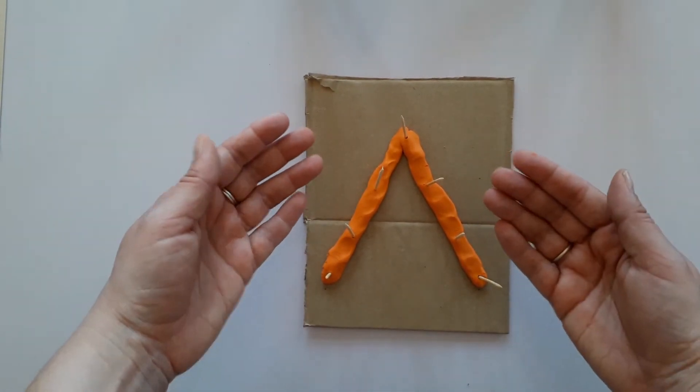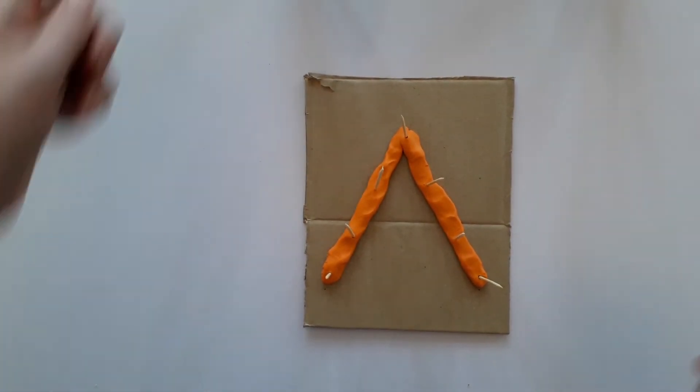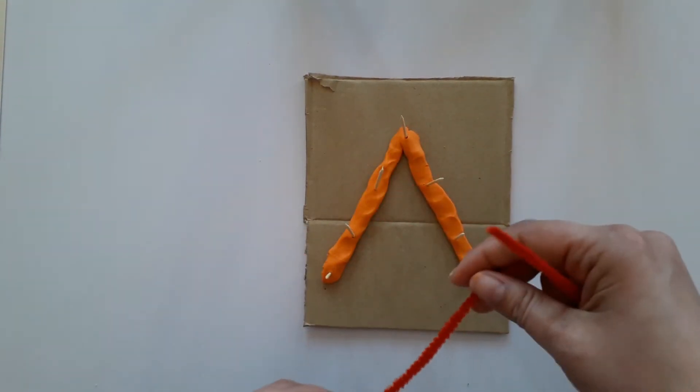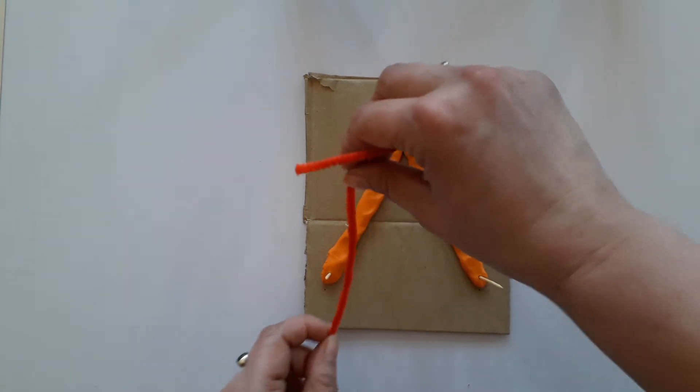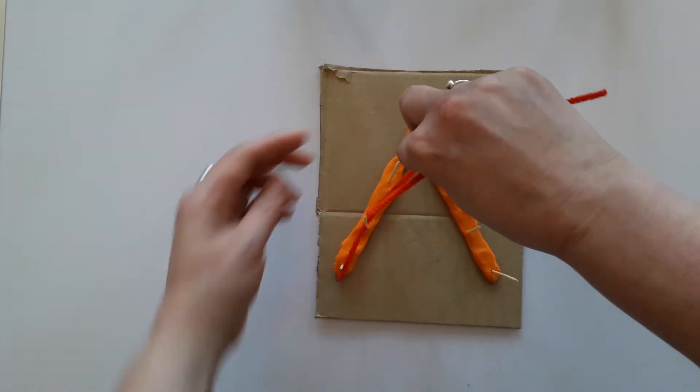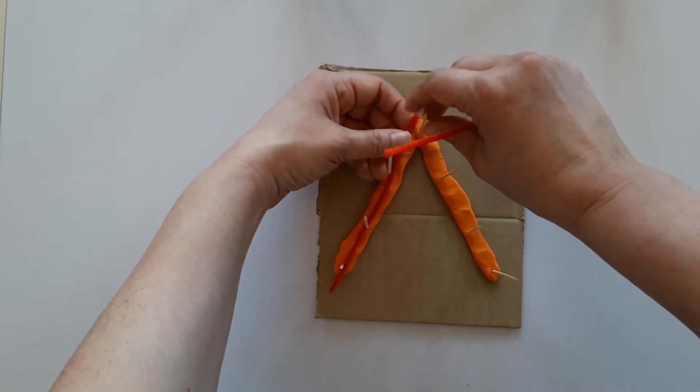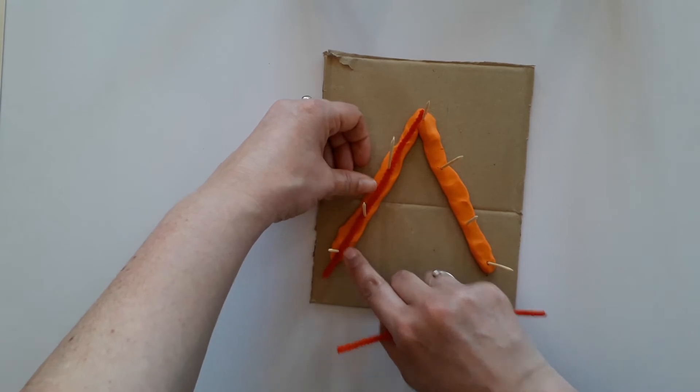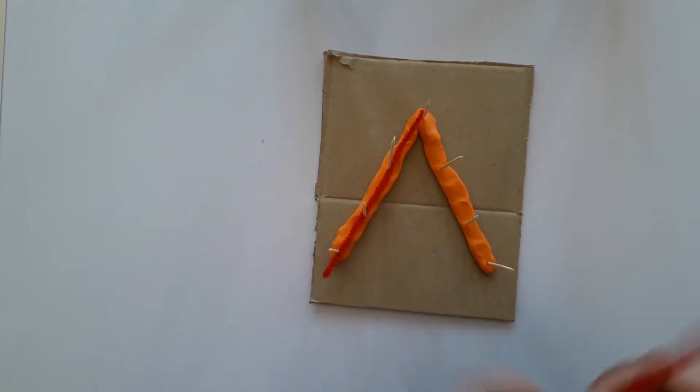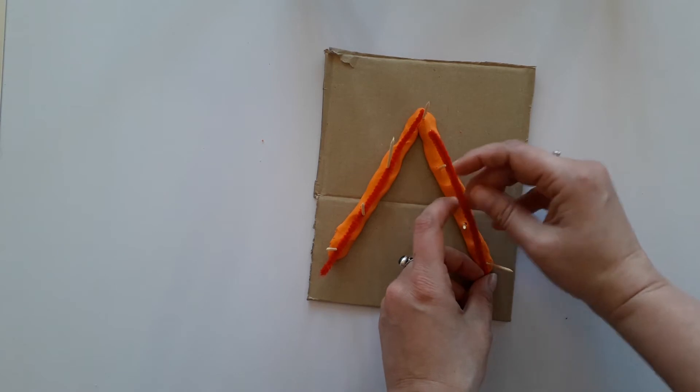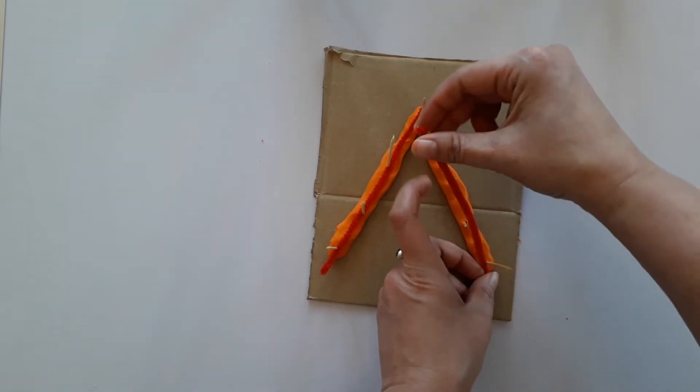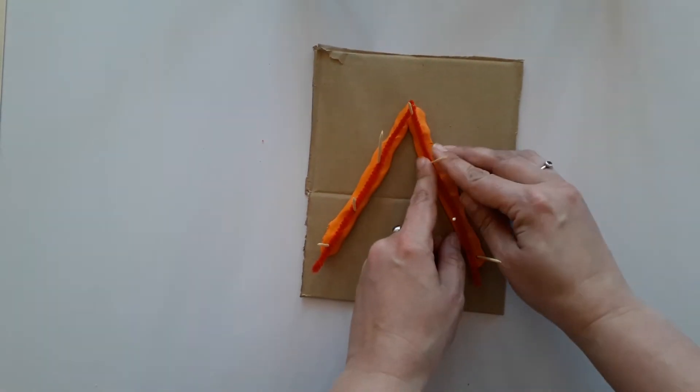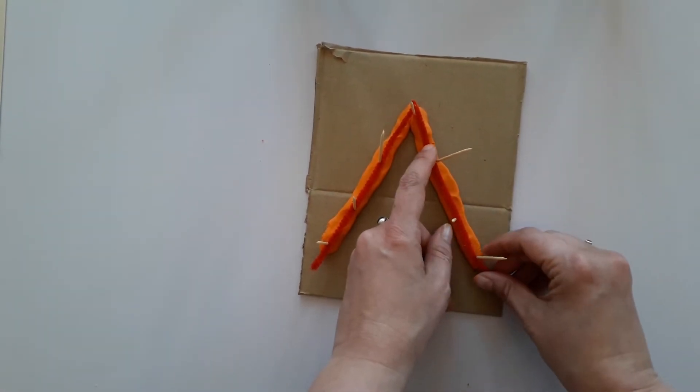Now there are two ways of doing the weaving. If like me you've ended up with two short bits like this, what you can do is you can start on the inside, the outside, the inside, the outside, just like this. Make sure you push it down and then you can do the same on this side, inside, outside, inside, outside and push it right down. That's our first layer down.